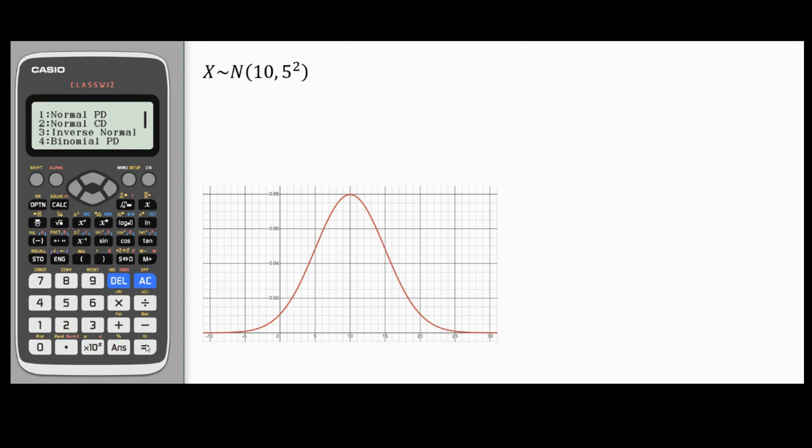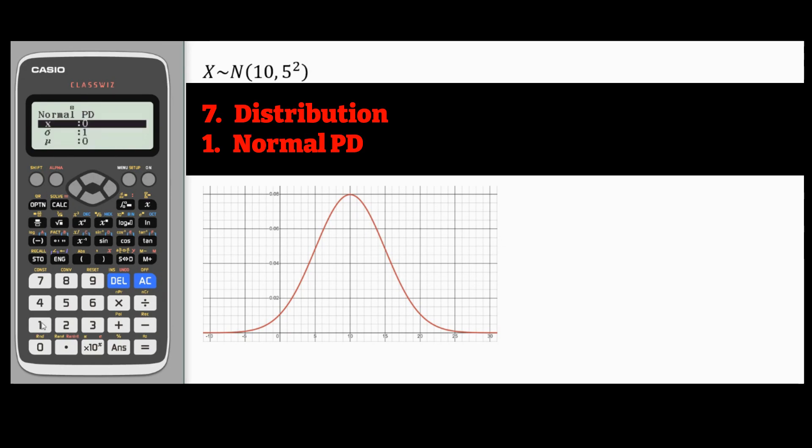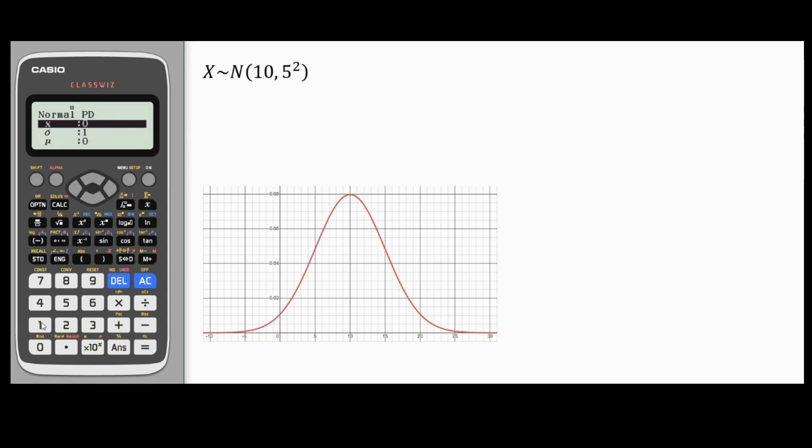You have the normal PND option in number one, and in this screen you have three inputs: X, Sigma, and Mu. X is the X coordinate for which you want to find the Y coordinate. For example, let's try and calculate the peak which happens when X is 10.